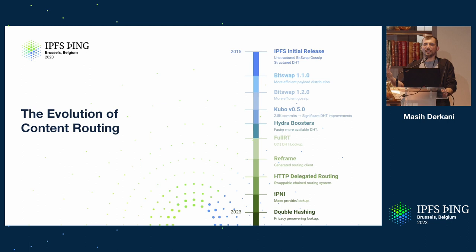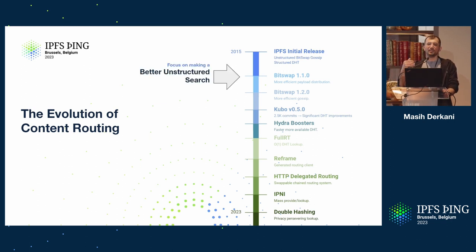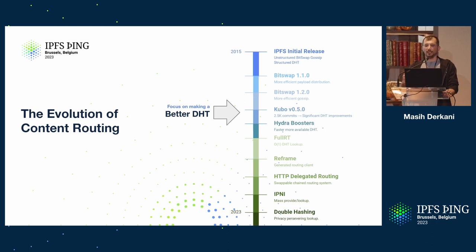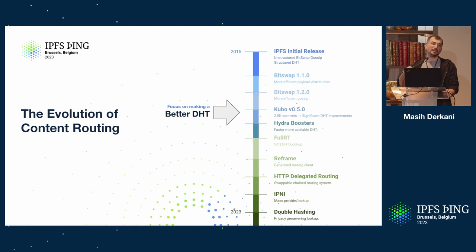Then BitSwap 1.1 and 1.2 came about. These two advancements focused on improving this unstructured way of lookup — this gossip mechanism across the network. Then Kubo 0.5 happened. This is way before my time, so I've done a bit of archaeological work and talked to folks that have been here much longer than I have. Kubo 0.5 introduced significant improvements into the structured way of looking up data. DHT became much more sophisticated and much more healthy. After that, we see a series of work pushing on that front. We have Hydra boosters, which introduce highly available DHT nodes with shared knowledge that provide a high likelihood of hitting a node with significant DHT information, significantly improving lookup success.